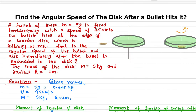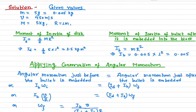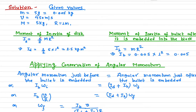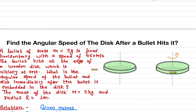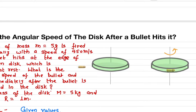The moment of inertia of a disk is (1/2)mr². You have to memorize these standard formulas for certain geometries. So, (1/2) × mass (5 kg) × radius squared (1²) gives us 2.5 kg·m².